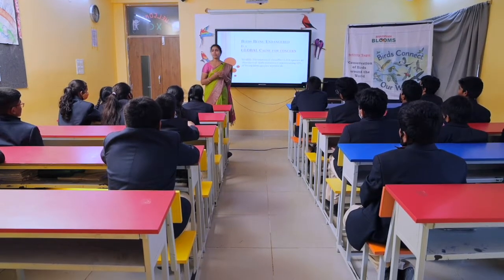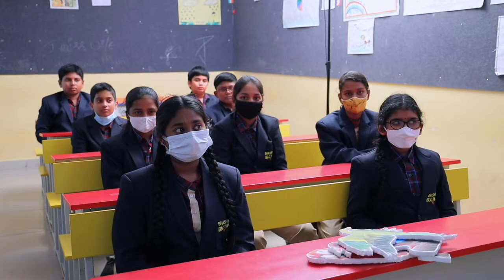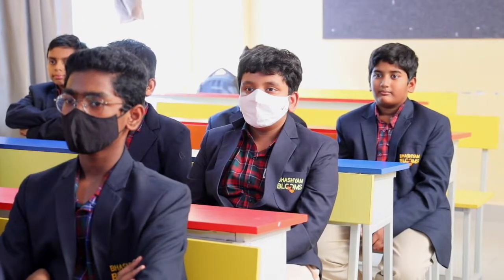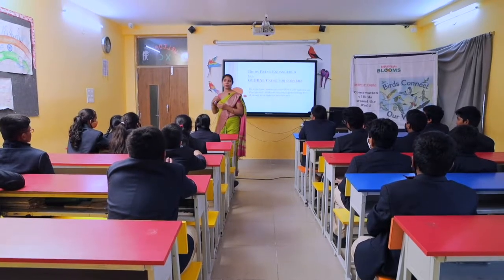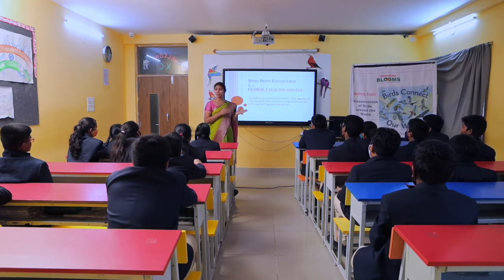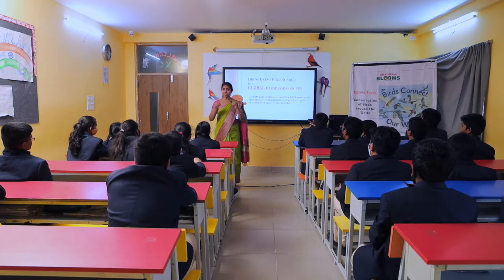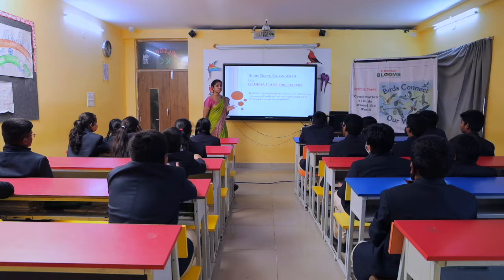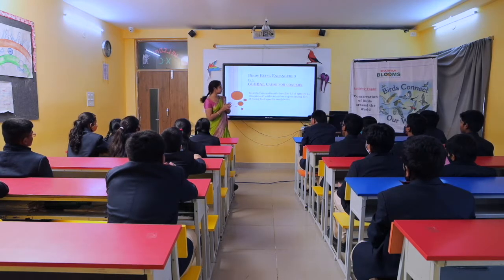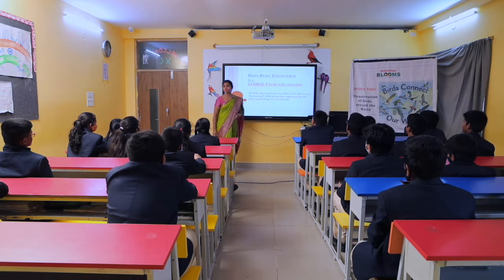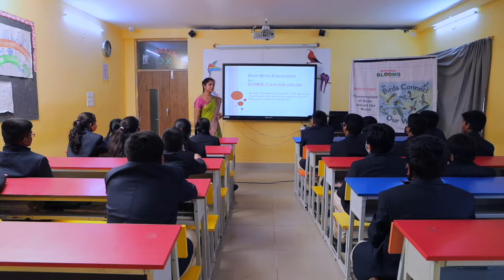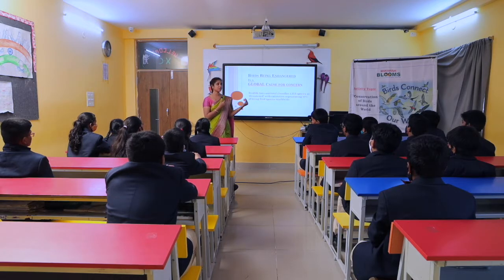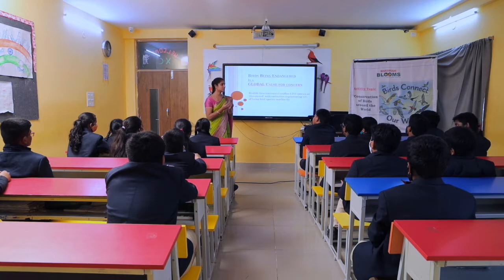Birds getting endangered is a real cause for concern. Nowadays many birds are getting extinct — some naturally, as every species tends to go extinct over time with new ones emerging. But there is also a lot of human intervention causing bird extinction. Nearly 1,313 species of birds are on the verge of extinction — that's nearly 13% of the total bird population. We have to make all efforts to make sure birds stay and don't go extinct.